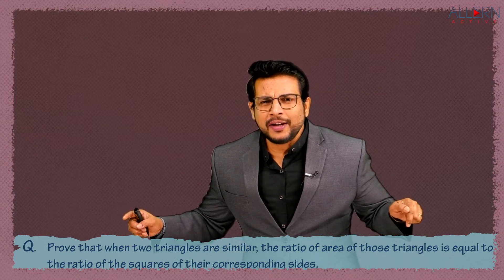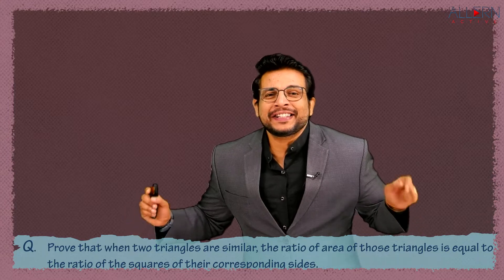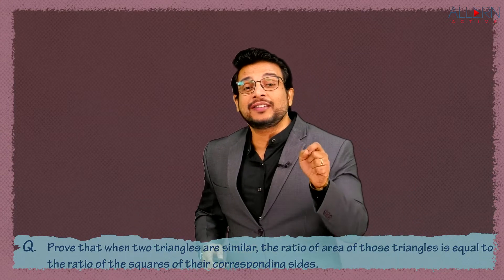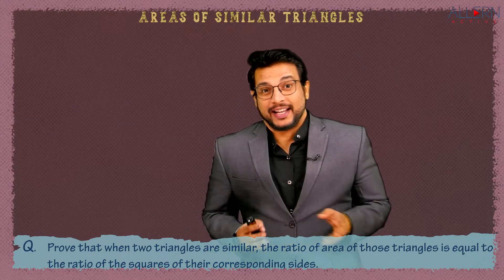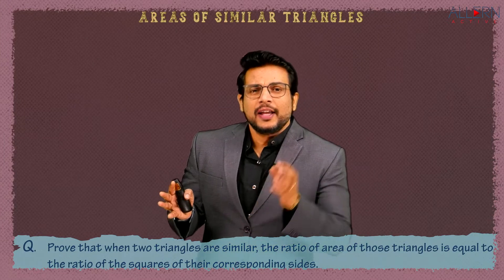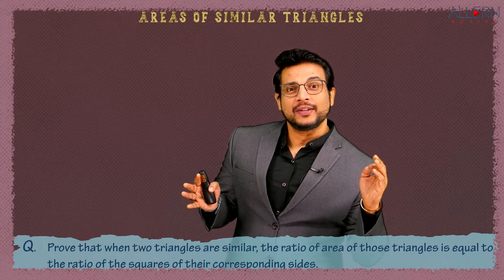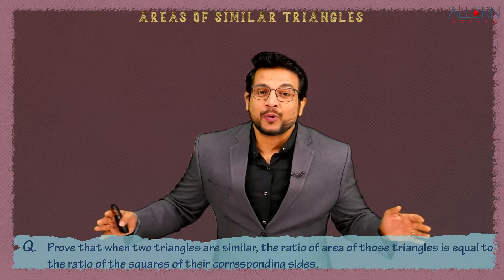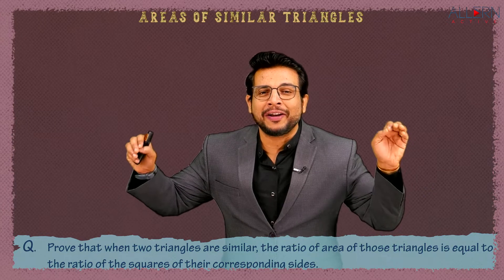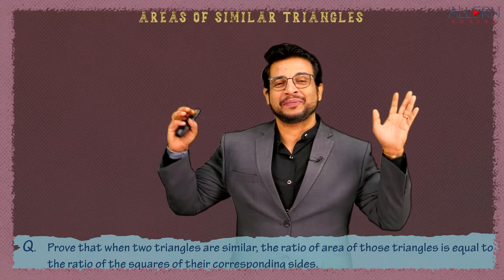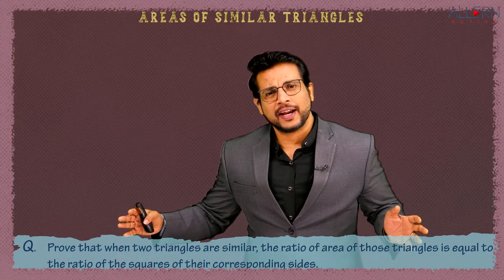When we read the statement, does this remind us of something? Yes — this statement is nothing but the theorem on areas of similar triangles, which says: when two triangles are similar, the ratio of their areas is equal to the ratio of the squares of the corresponding sides. So proving this statement means we are supposed to prove that theorem.